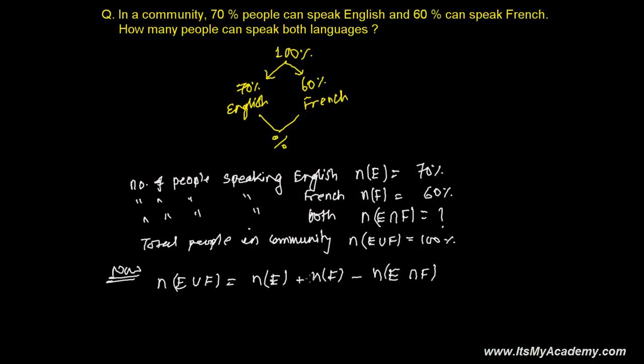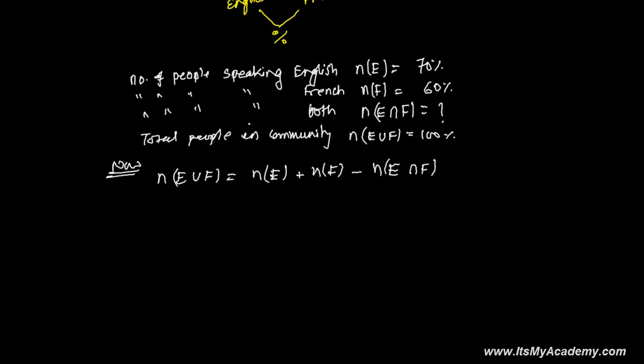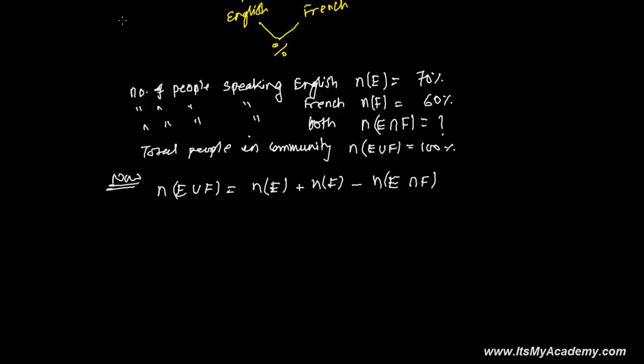In a Venn diagram, I think I already have shown you. Let me draw one more time the Venn diagram. So suppose, if this is the total community, 100%, and few people can speak English and few people can speak French.